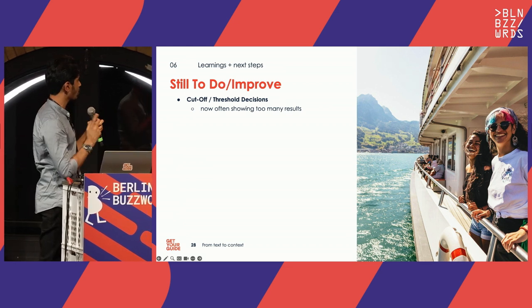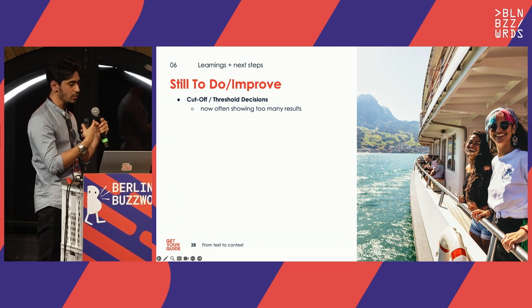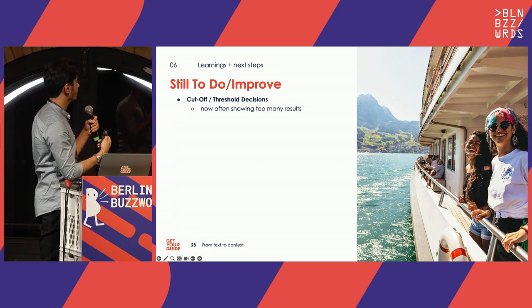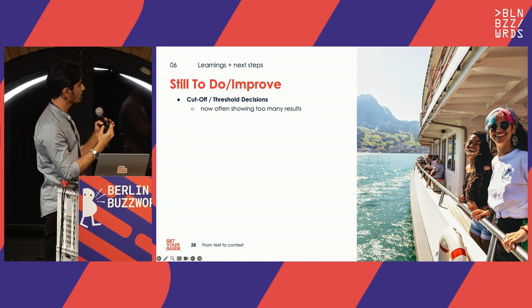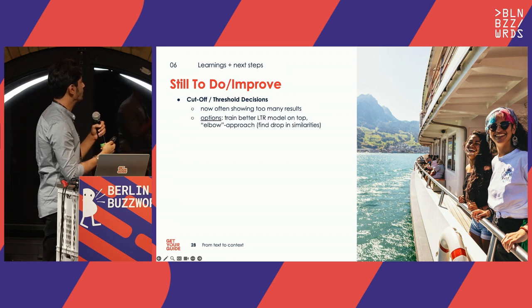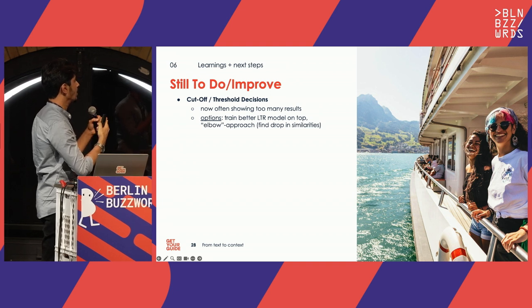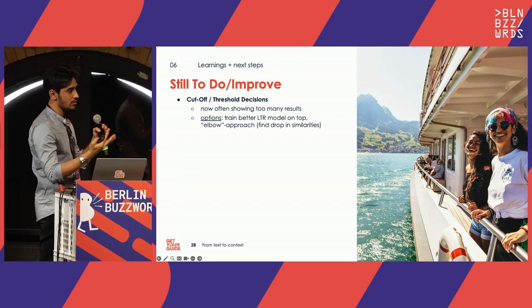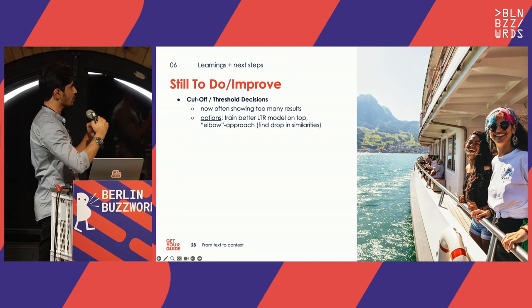The cutoff decision was something we primarily needed to iterate on multiple times across the three A/B tests. That's where we still want to improve further — figuring out the optimal parameters for ranking and cutoff thresholds. Training a better learn-to-rank model on top is one approach we're considering, to re-rank results and cut off those with a bigger difference in scores or vector similarities.